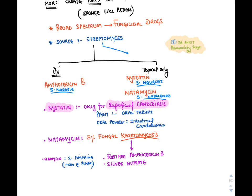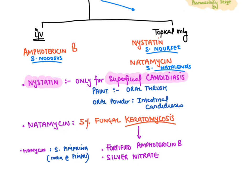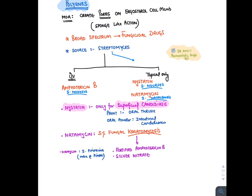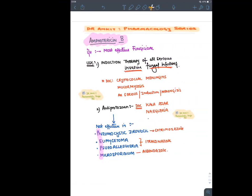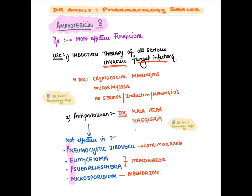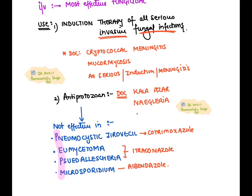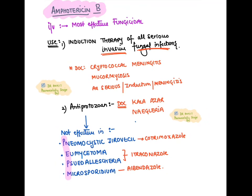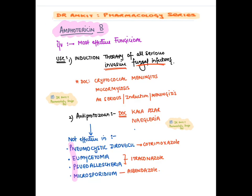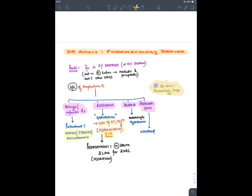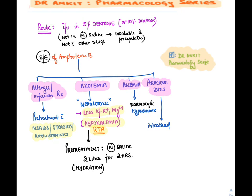Topical polyenes include nystatin (for superficial candidiasis like oral thrush, from Streptomyces noursei) and natamycin (for fungal keratitis). Hachimycin, developed in India from Streptomyces pimprina, is also used. Amphotericin B is the mainstay for invasive fungal infections except for mycetoma, rhinosporidiosis, microsporidiosis, and Pneumocystis. It is also anti-protozoal — drug of choice for kala-azar and Naegleria. It must always be given in dextrose solution, never normal saline.